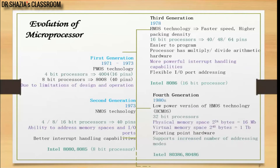Next came the fourth generation with low power versions using HMOS technology. It was a 32-bit processor with a physical memory of almost 16 megabytes and virtual memory of 1 terabyte. The key advantage of this generation was built-in floating point operation — they did not require a co-processor to do so.